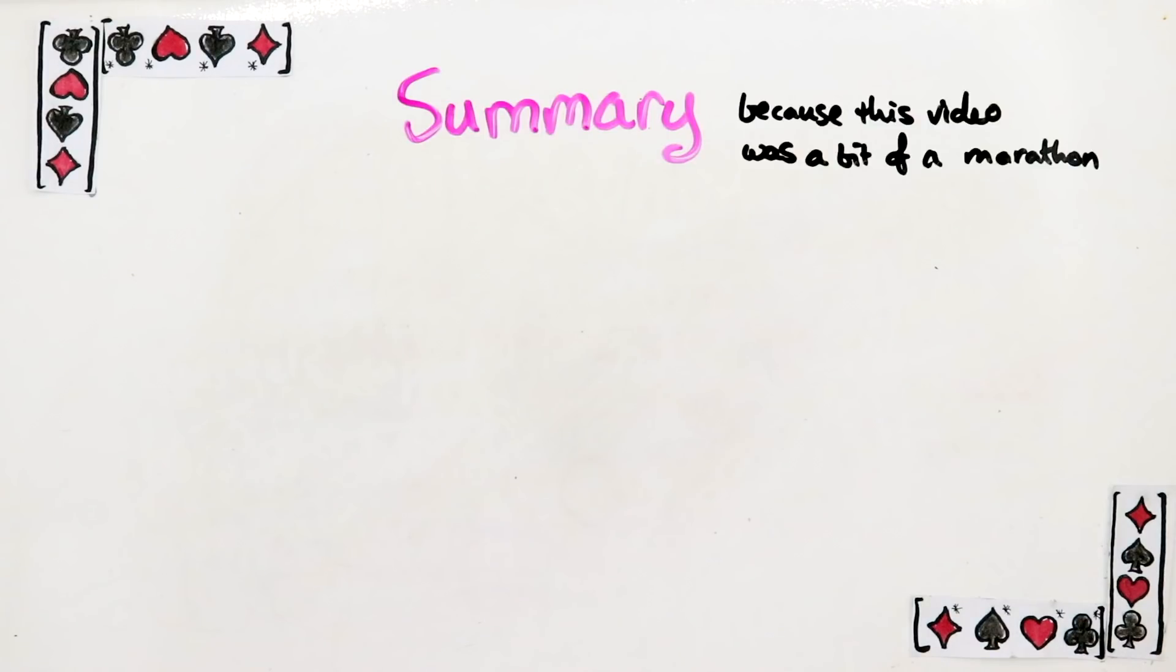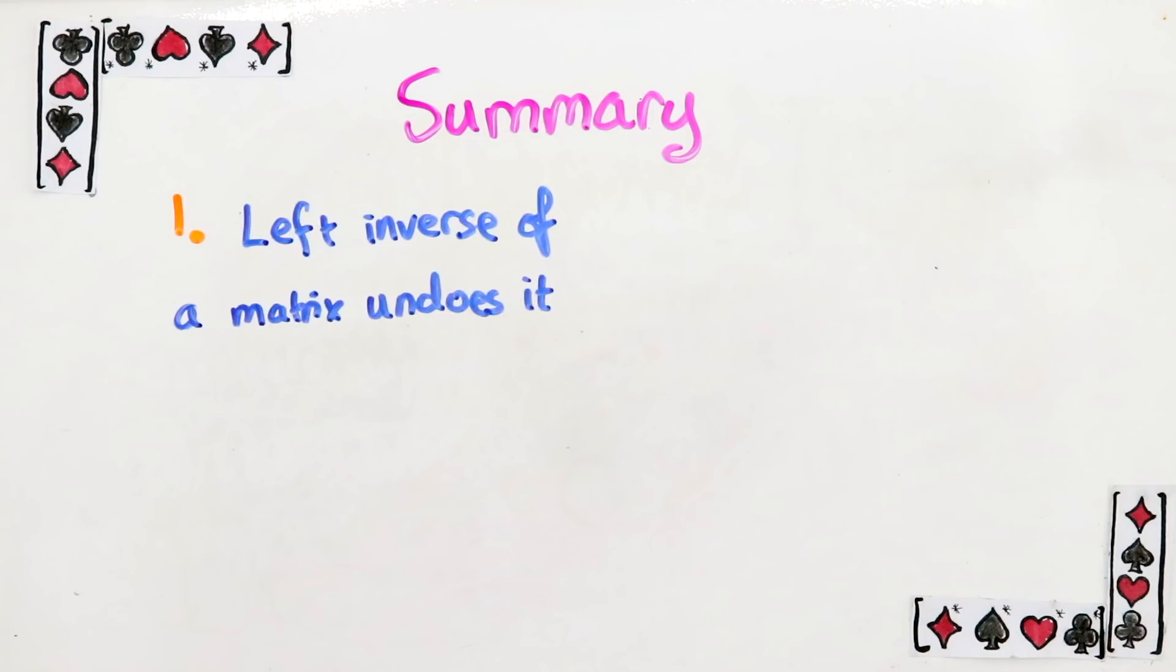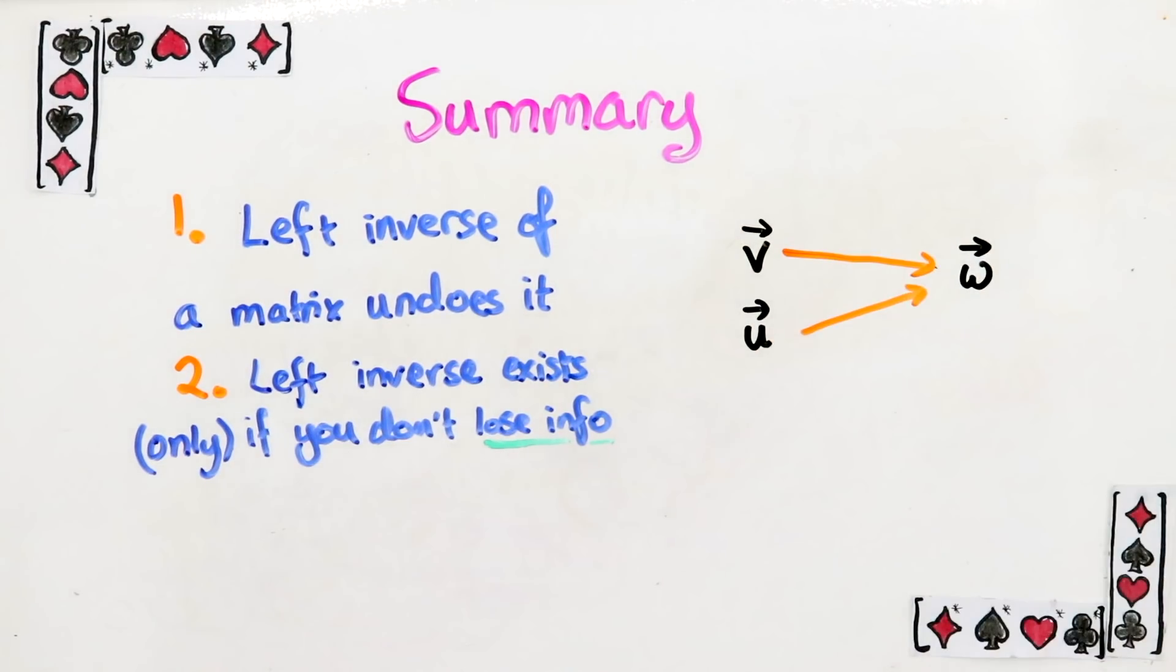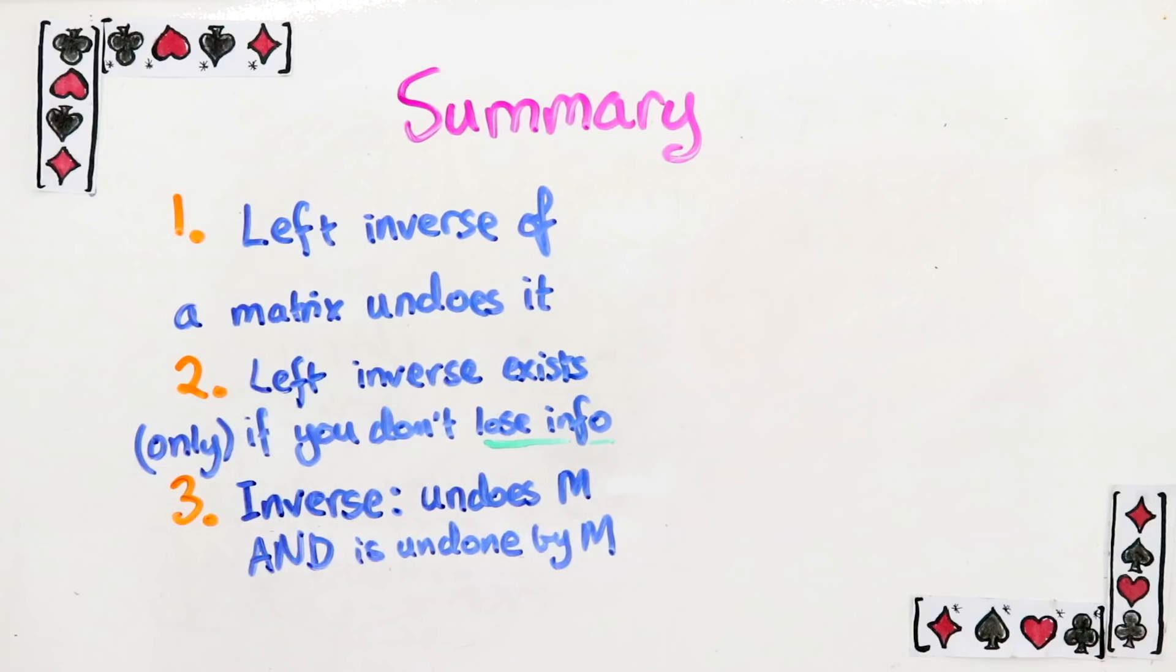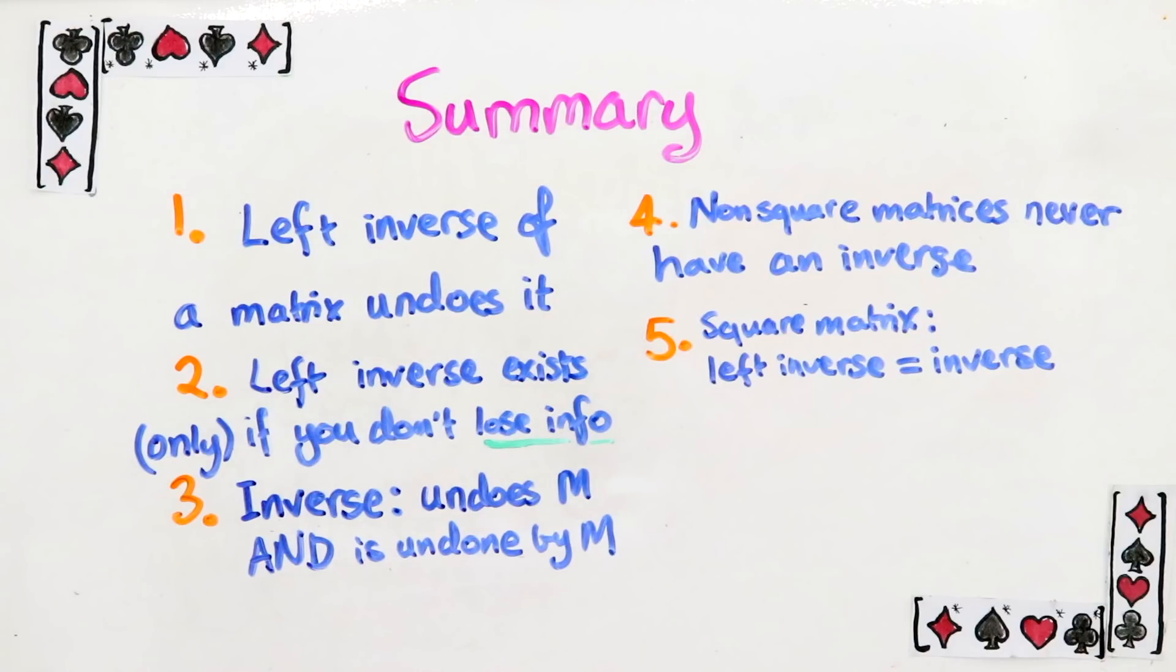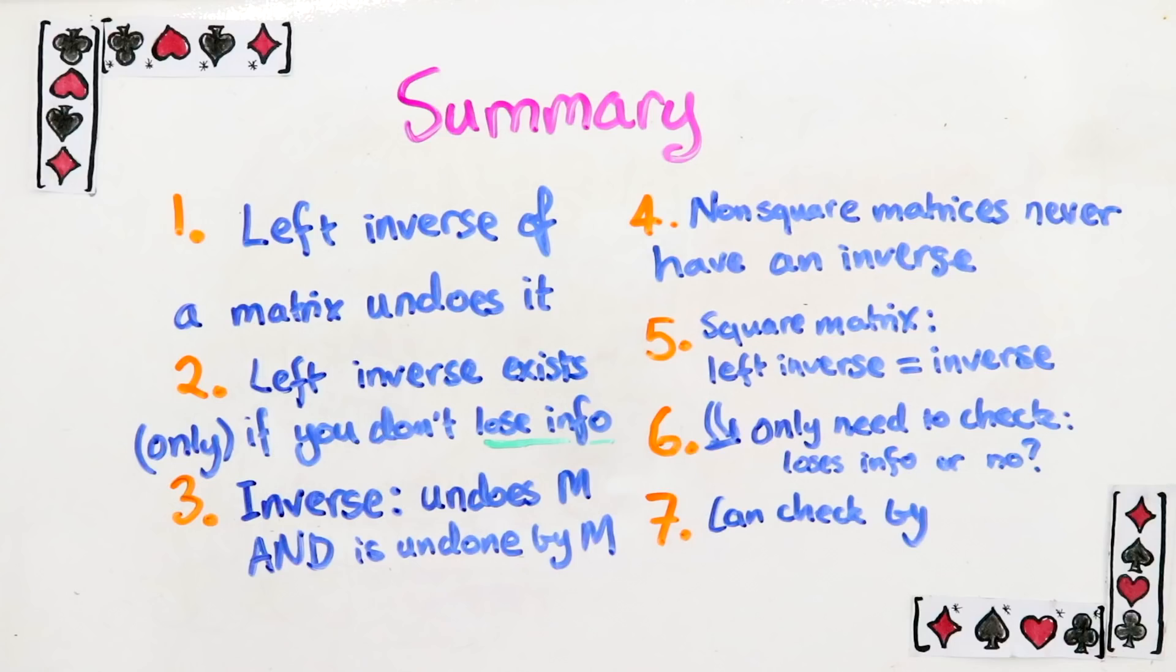Let me summarize quickly what we learnt in this video. 1. A left inverse of a matrix is a matrix that undoes it. 2. That the left inverse exists if you don't lose information, i.e. if the matrix never sends two different vectors to the same vector. 3. The inverse is the matrix that both undoes the matrix and is undone by the matrix. 4. Non-square matrices never have inverses. 5. For a square matrix, the left inverse is equal to the inverse. 6. You only need to check if a square matrix loses information or not to decide whether it has an inverse. And 7. You can check whether the matrix loses information by looking at how many different vectors get mapped to 0. This you can do by solving the equation M V equals 0. And so that's it.